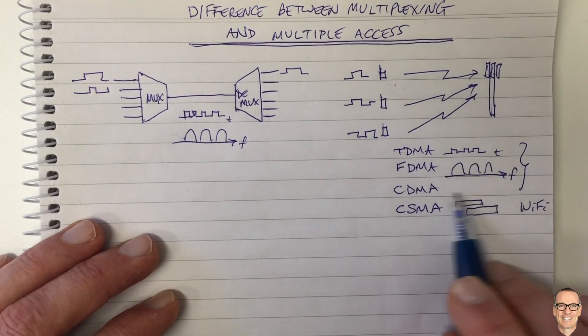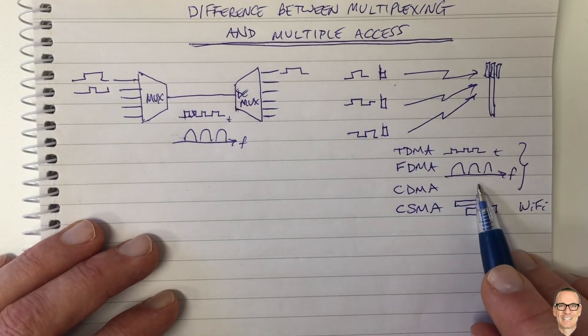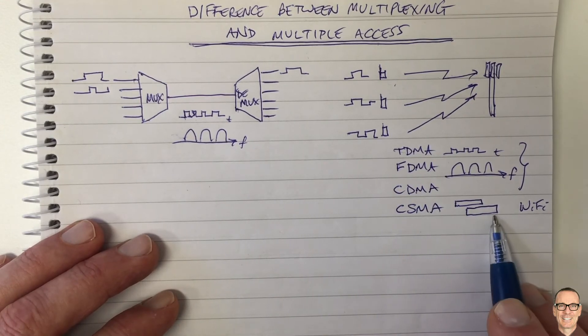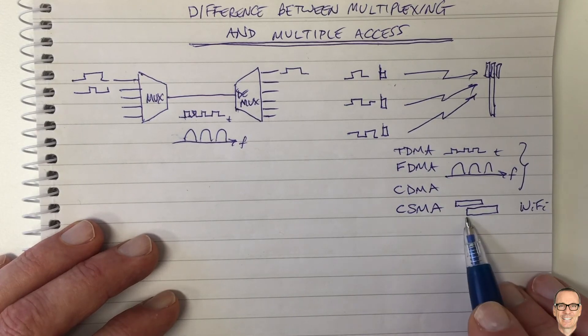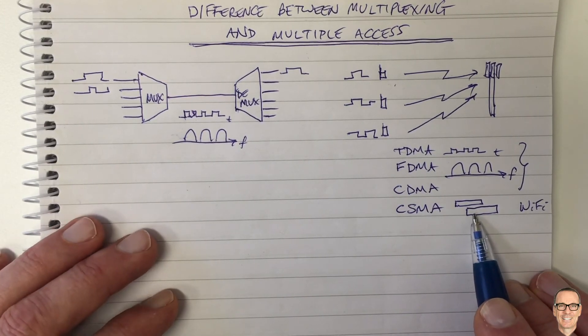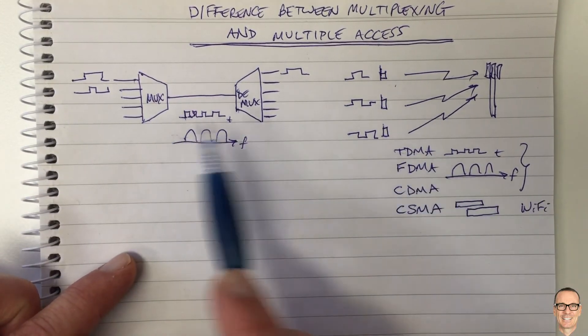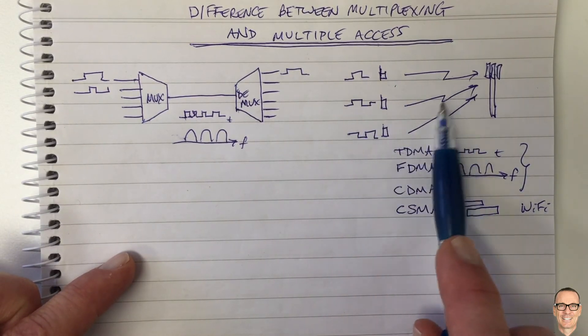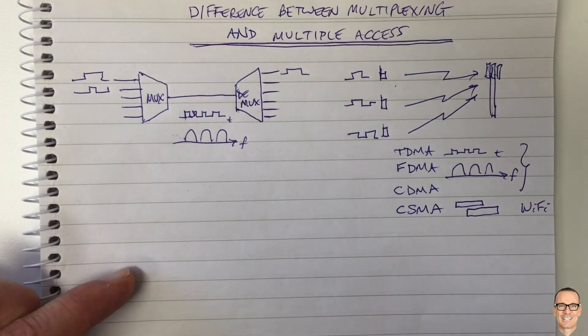And so if you have a coordinated system, you can try to minimize interference. And also you try to minimize here, but it's in a less coordinated or totally uncoordinated way, as long as you adhere to the standard of how you access the channel. The main difference being that you don't have coordination, and you have interference in the multiple access case.